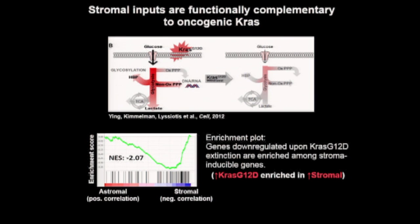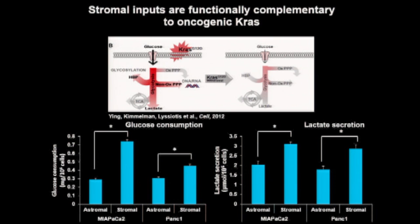To see whether these similarities in gene expression translated to metabolic phenotype, I looked at whether stromal cues impact the ability of these cells to take up glucose or secrete lactate. Indeed, I found that human pancreatic cancer cell lines both consume more glucose and secrete more lactate in the context of stromal signals.